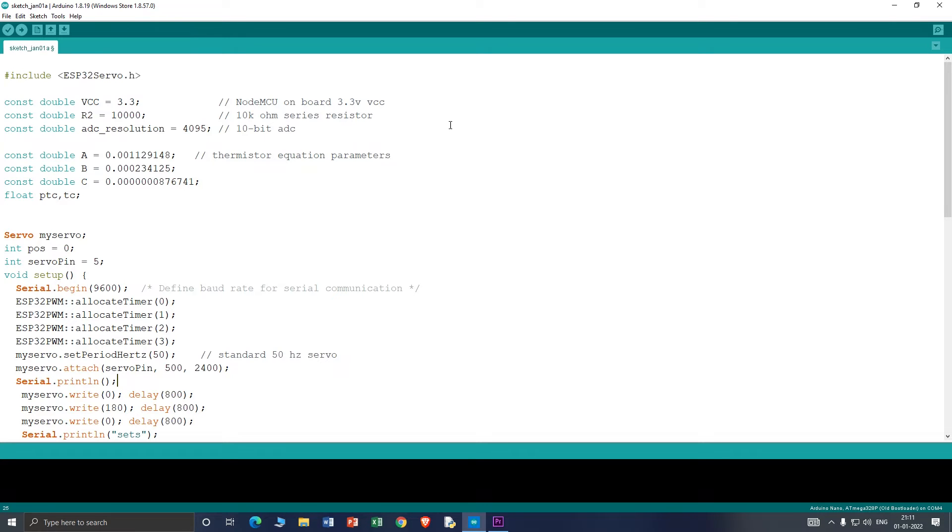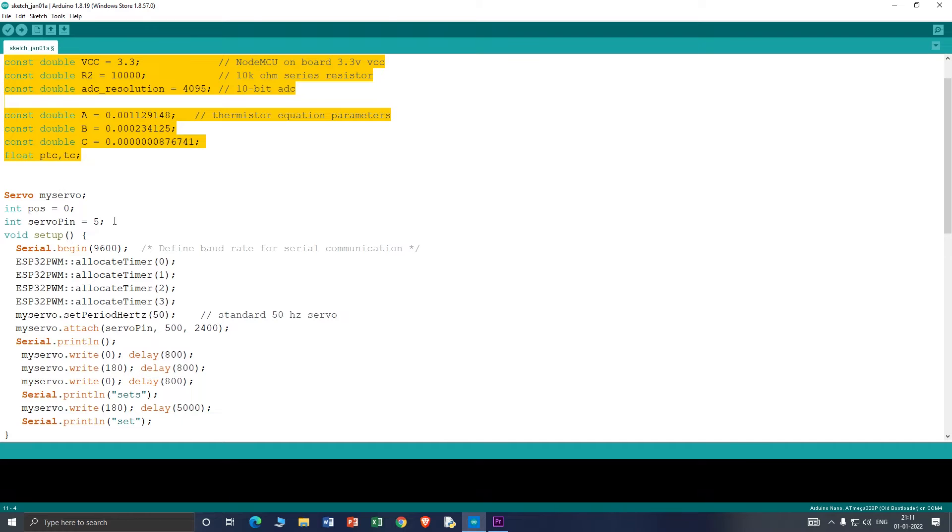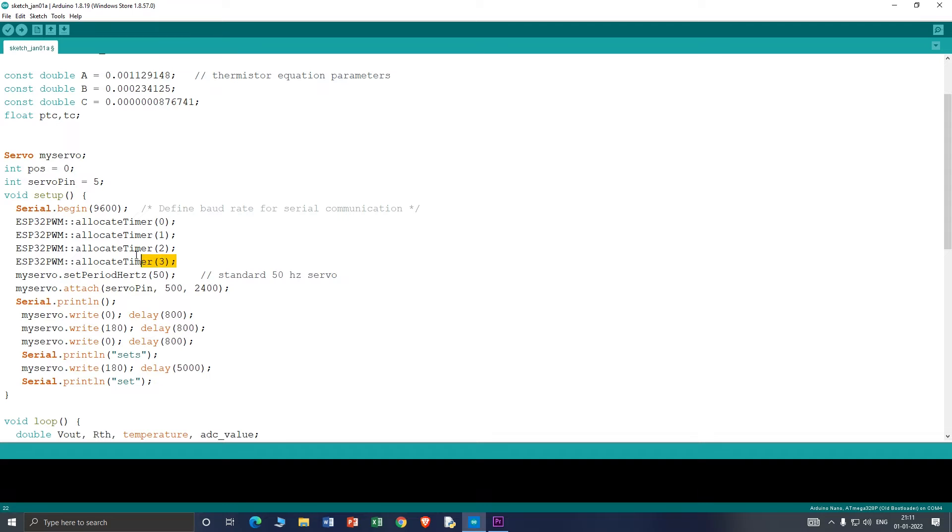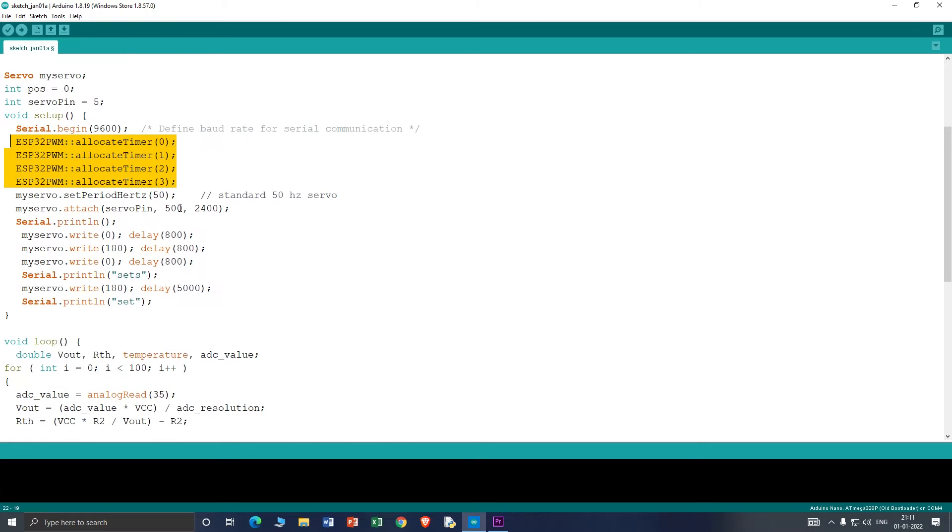Driving a servo motor using Arduino is very easy but to drive a servo motor using ESP32 you have to download and include this ESP32 servo library. Then I take some variables for calculation purpose and declare the pin D5 as servo pin. In the setup part I start timers of ESP32 which are responsible for generating PWM signals, then set the PWM frequency to 50Hz as servo motors need 50Hz square wave signal to drive it.